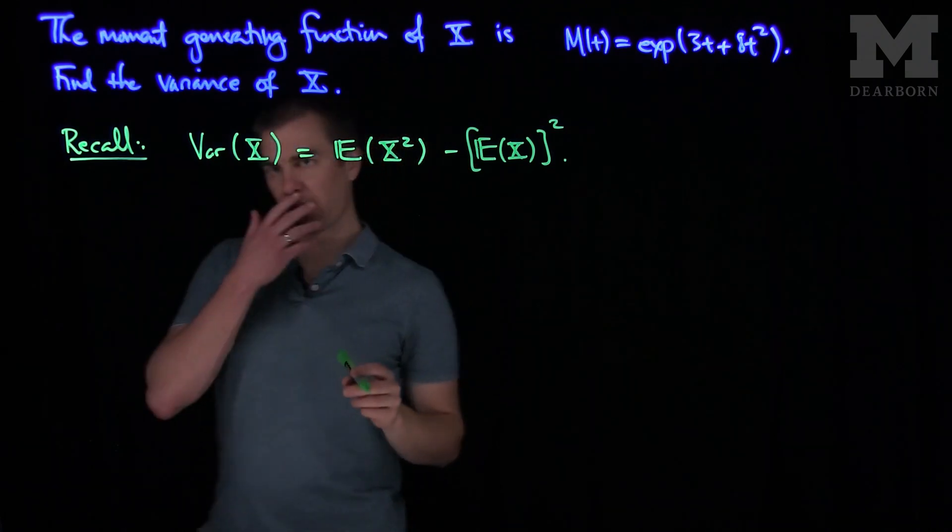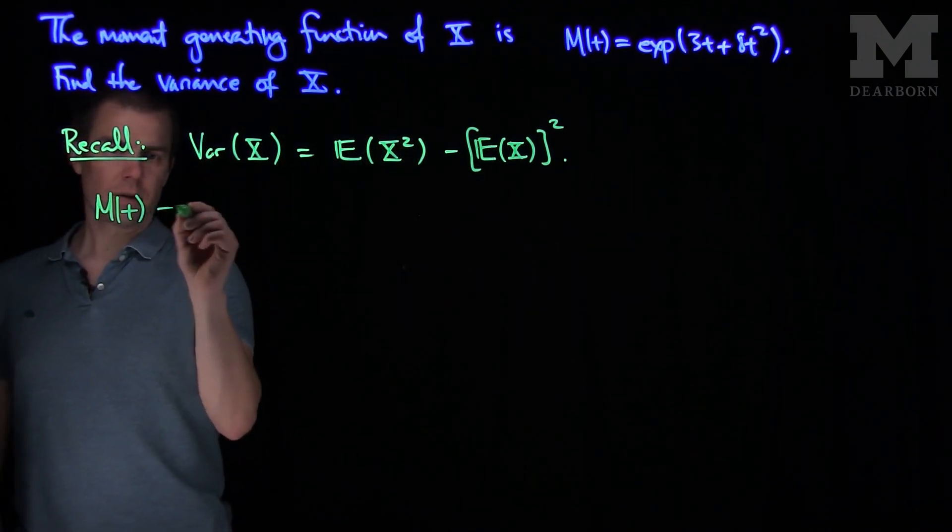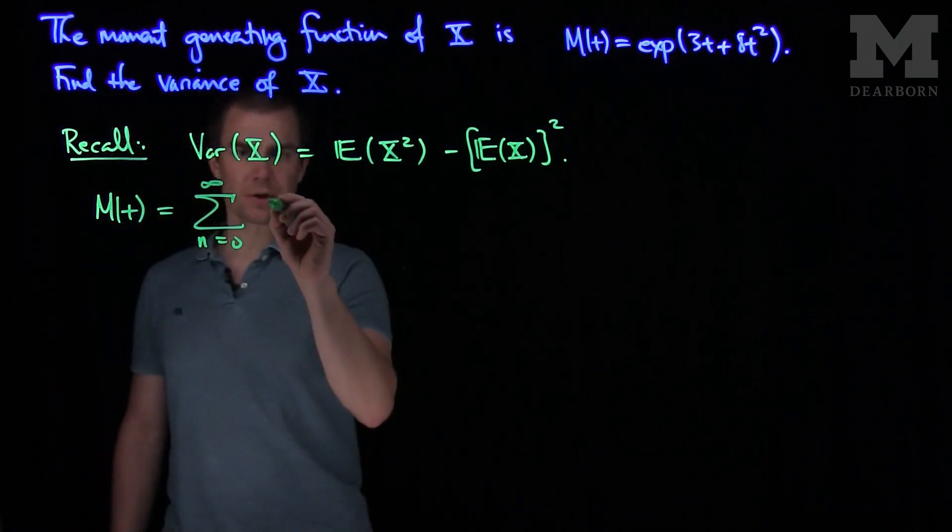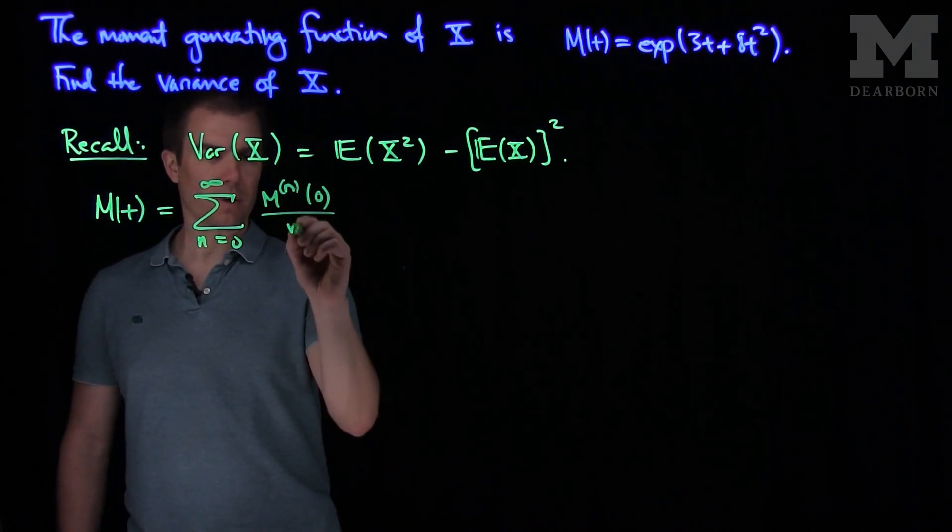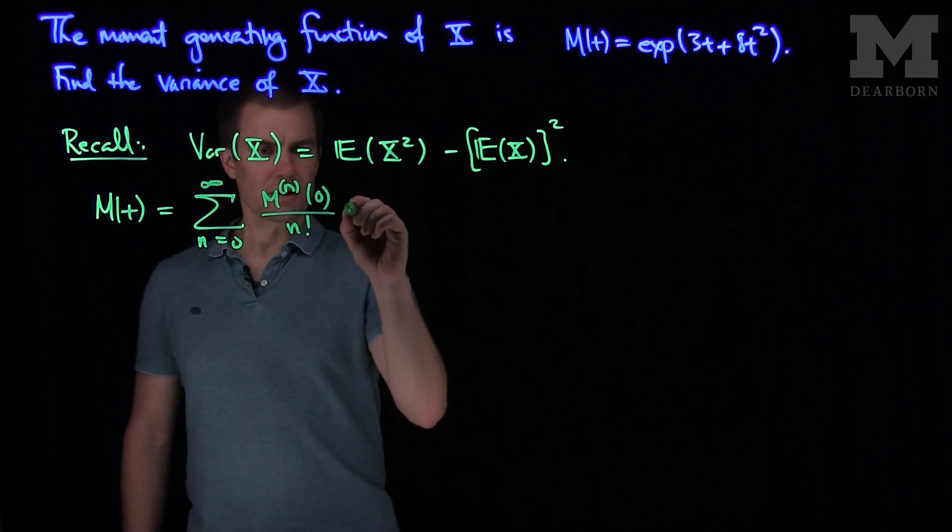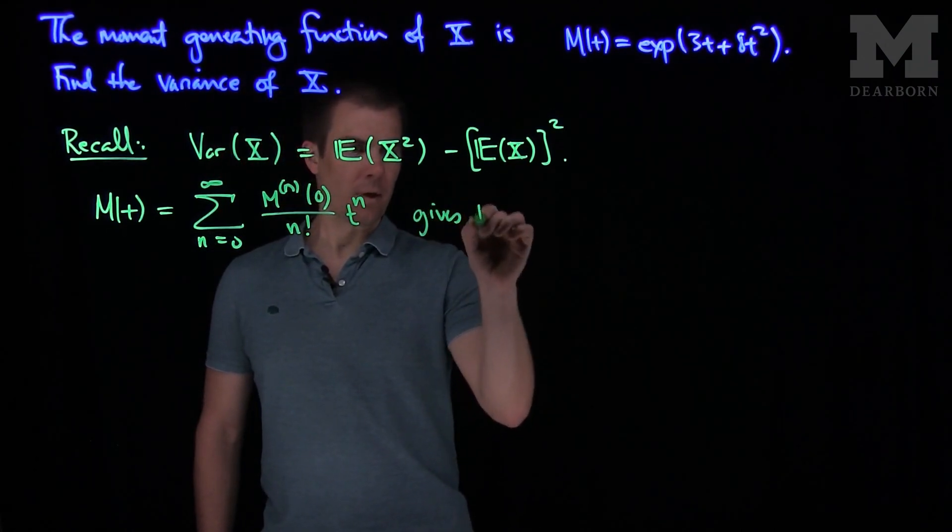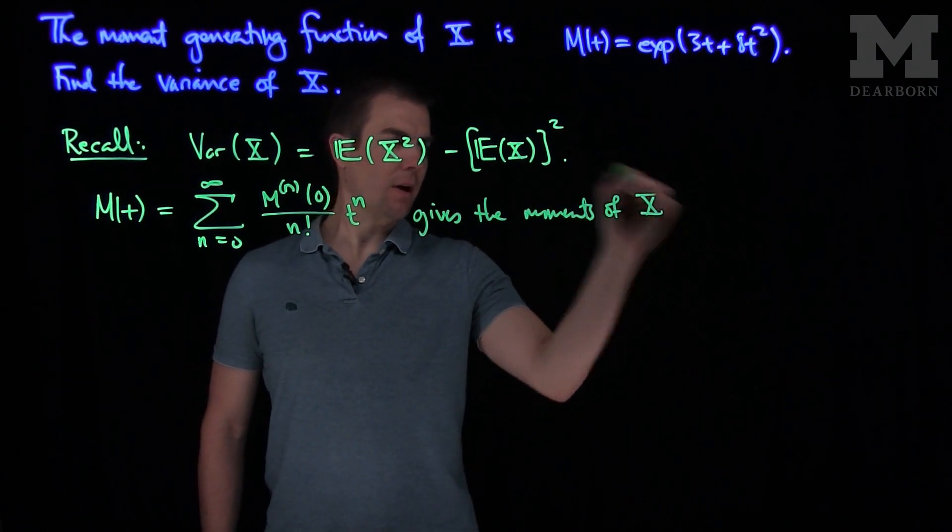We also know that the moment generating function M(t), written in this form as the sum n goes from 0 to infinity in Maclaurin expansion, M^(n)(0) over n factorial times t to the n, gives the moments of X.